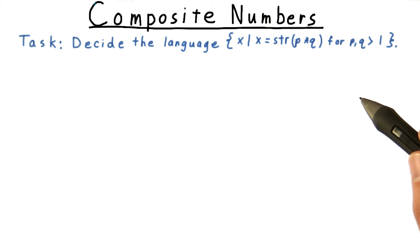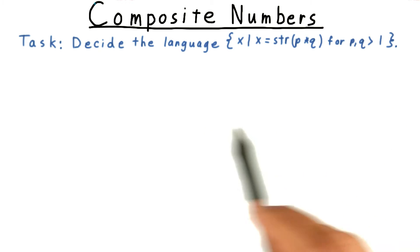To get more intuition for the power of nondeterminism, let's see how much more efficient it makes deciding the language of composite numbers.